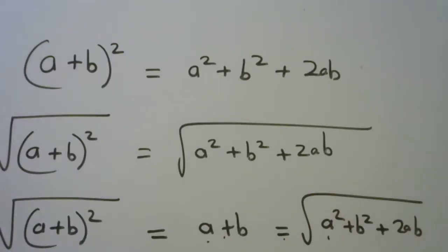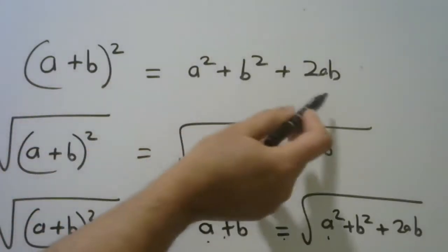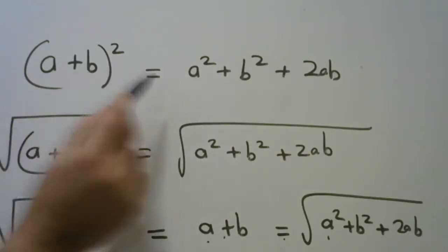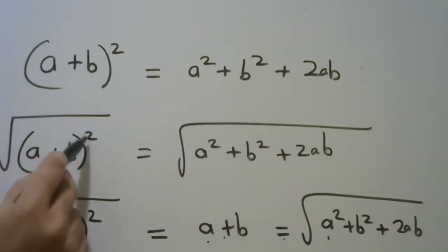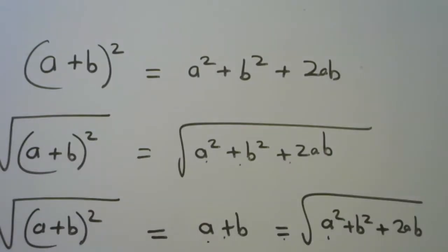Now just look at this. We can start from this point — this is accepted. A plus b all squared gives you this using the grid method. If I root both sides, I'm saying the square root of a plus b all squared is equivalent to the square root of a squared plus b squared plus 2ab. But I know that the square root of a plus b all squared is the same as a plus b.